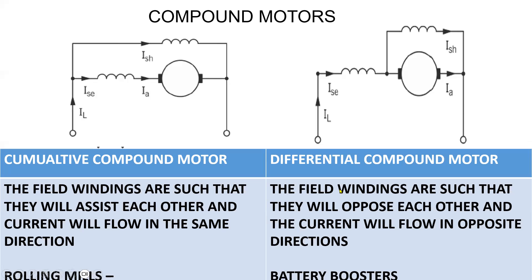For compound motors, we get the long shunt compound motor and the short shunt compound motor. It draws current from the supply — mechanical output and electrical input. For a cumulatively compound motor, the field windings assist each other and current flows in the same direction; they are used for rolling mills. For a differential compound motor, the field windings oppose each other and the current flows in the opposite direction; they are used for battery boosters.